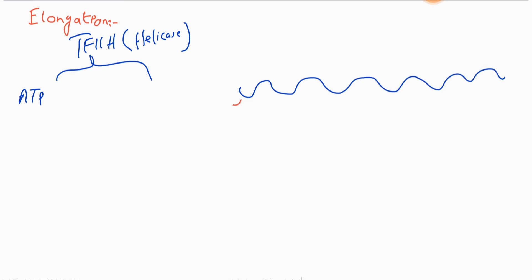After initiation, the next step is elongation. The TF2H protein has two functions: first, as a helicase, it uses ATP to unwind the DNA double helix to start transcription.